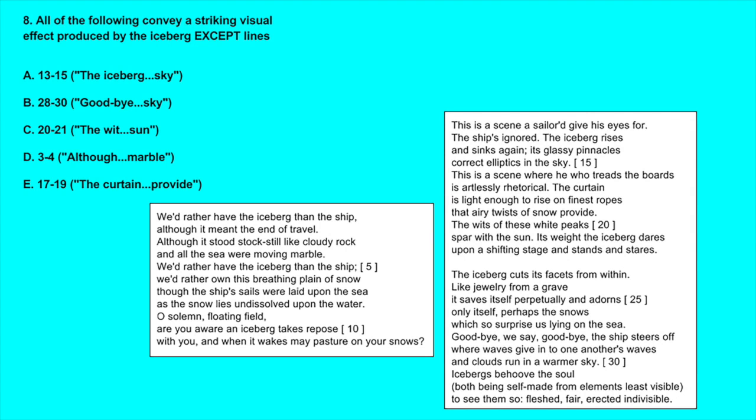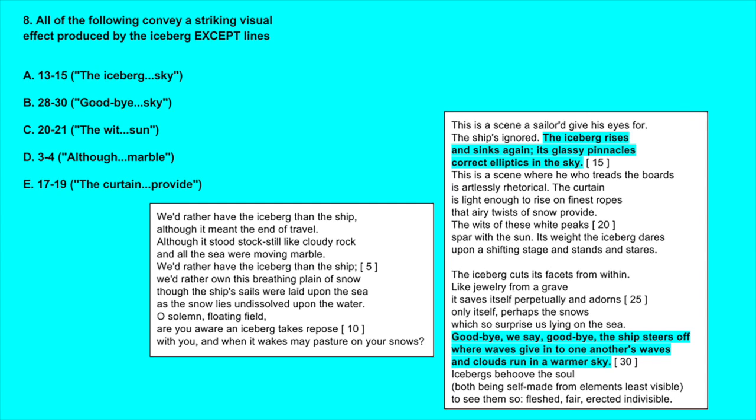Question number eight: All of the following convey a striking visual effect produced by the iceberg except lines what? So let's look through all of these. A, lines 13 through 15 - here we have the iceberg rises and sinks again, its glassy pinnacles correct elliptics in the sky. And then B, 28 through 30 - goodbye we say goodbye, the ship steers off where waves give in to one another's waves and clouds run in a warmer sky.